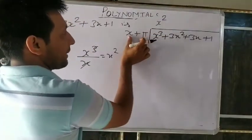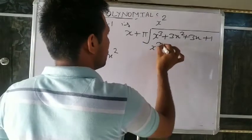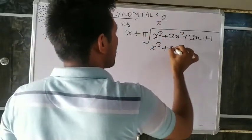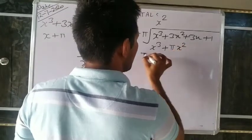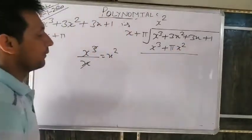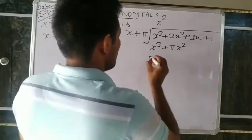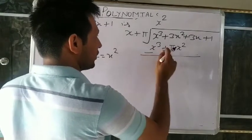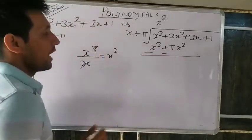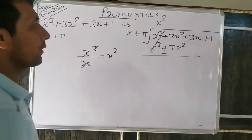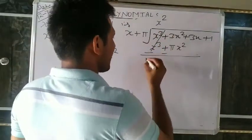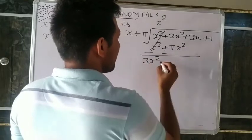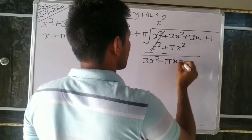Positive becomes negative. So x³ minus x³ equals zero. What remains is 3x² minus πx². We can combine like terms: x² is common, so (3−π)x². Bring down next terms: 3x+1. Write all remaining terms as they are.